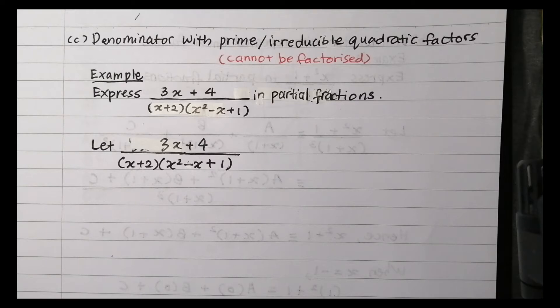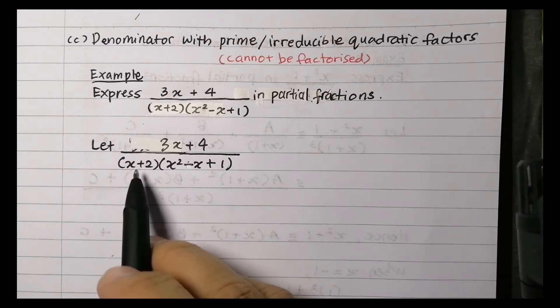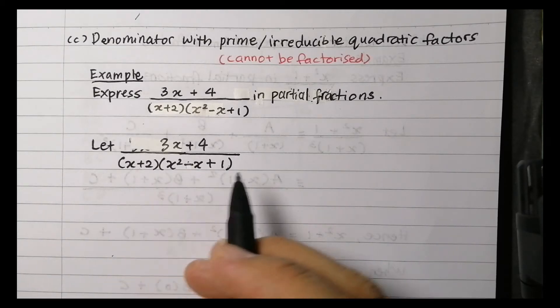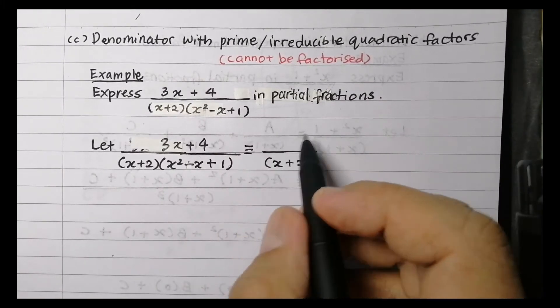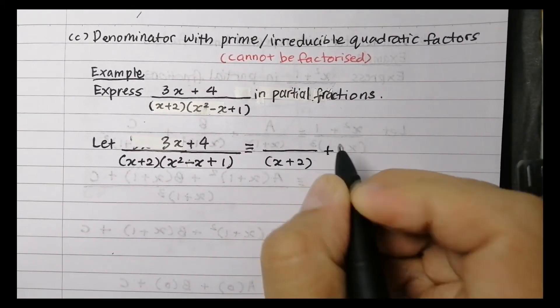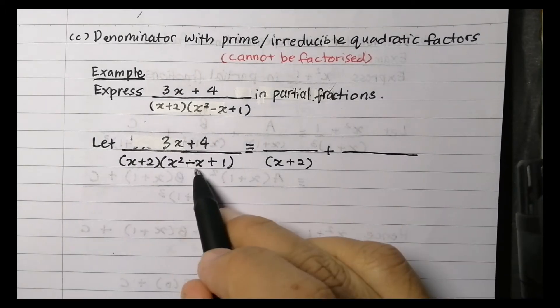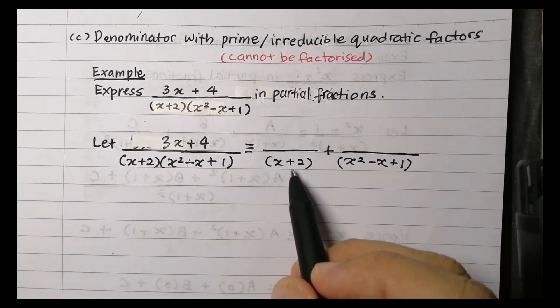The denominator of the given rational function consists of a linear factor and a prime quadratic factor. Now the given rational function can be written as the sum of two rational functions. So we can write separate denominators.